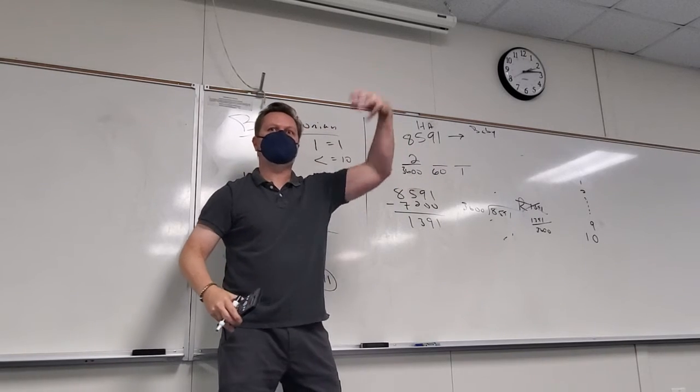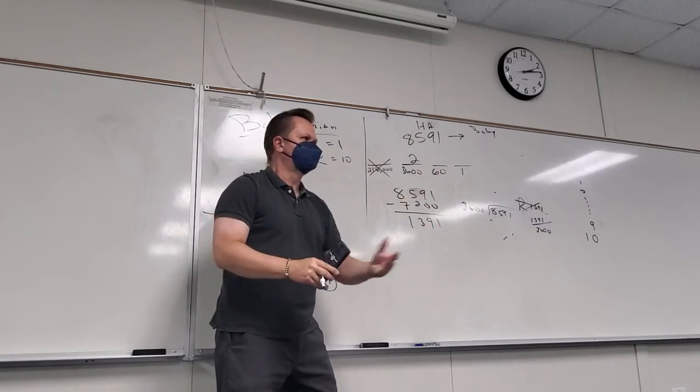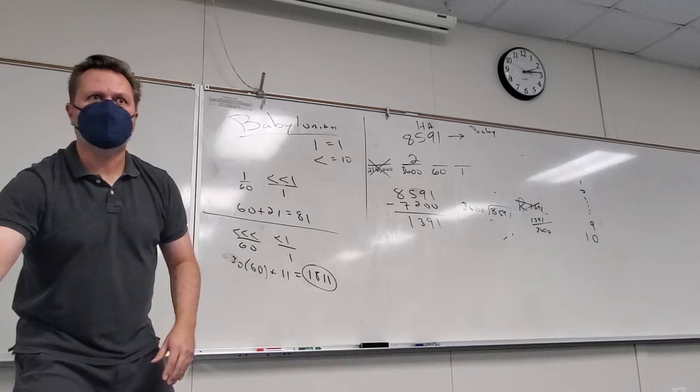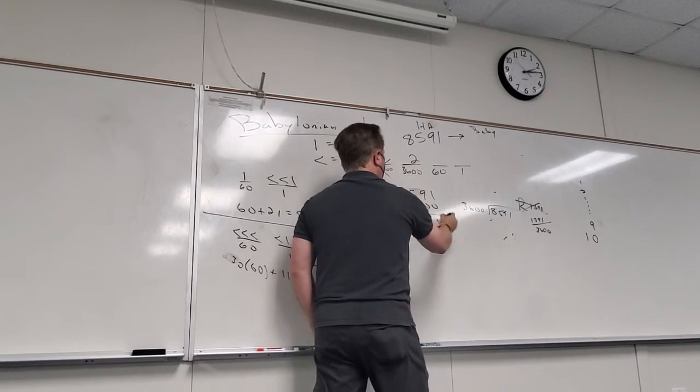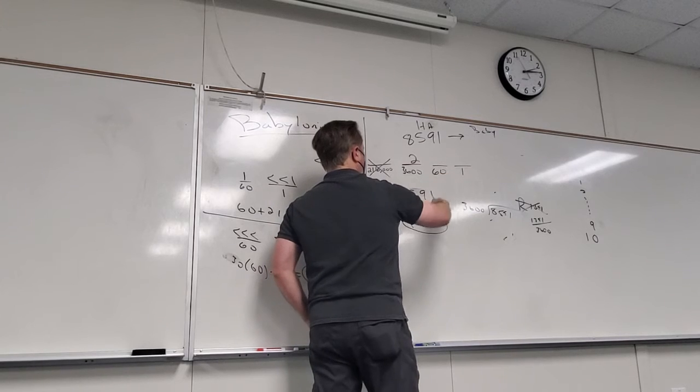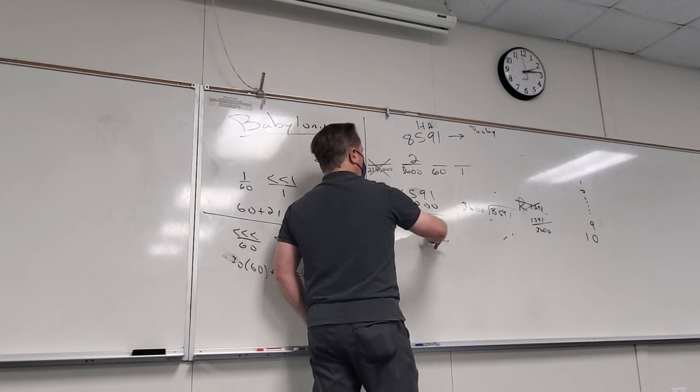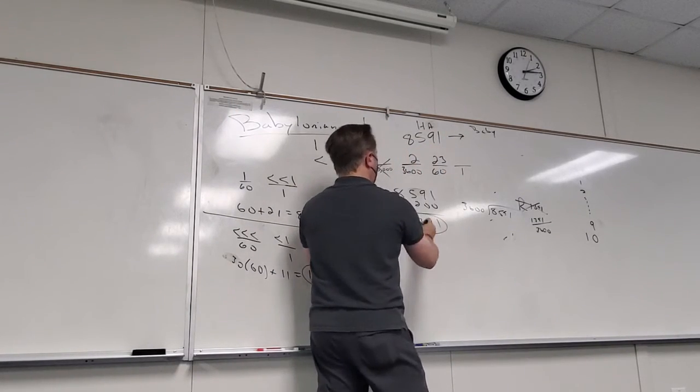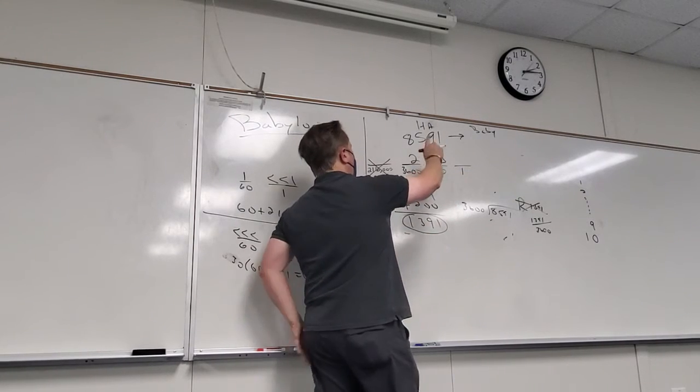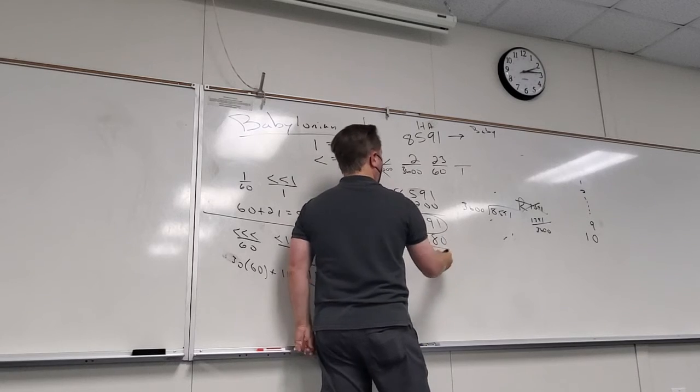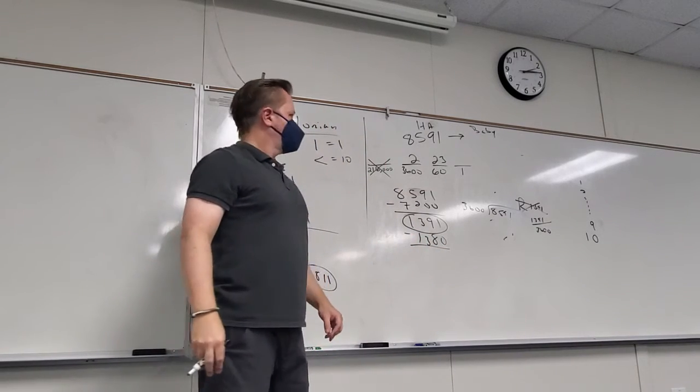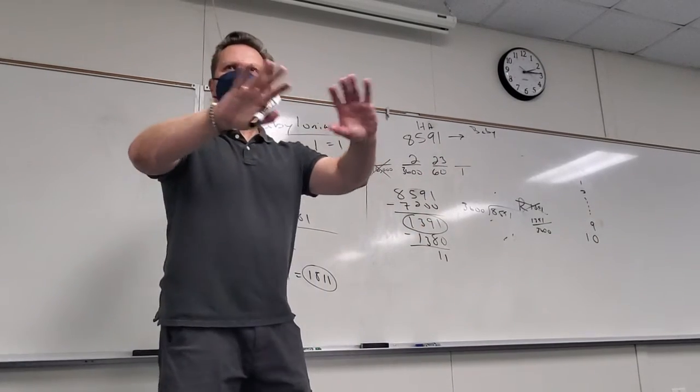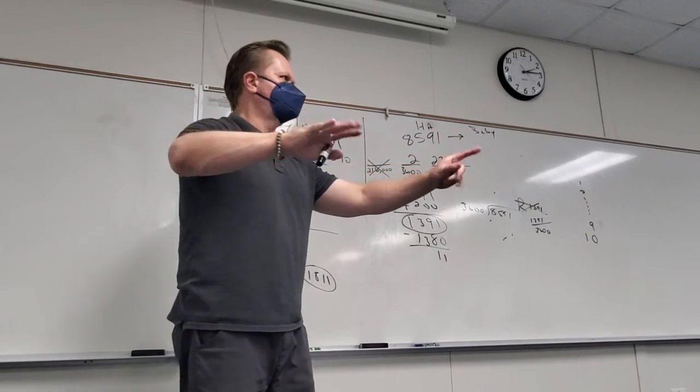If I wanted to go the other way, so let's say I wanted to put the number 8,591. That's in Hindu-Arabic, and I want to take that to Babylonian. How would I do that? So I want you to realize the ones place is sort of a leftovers place. Always.